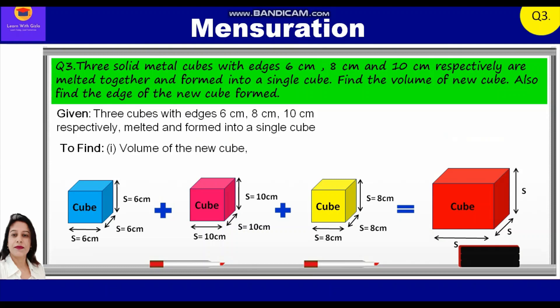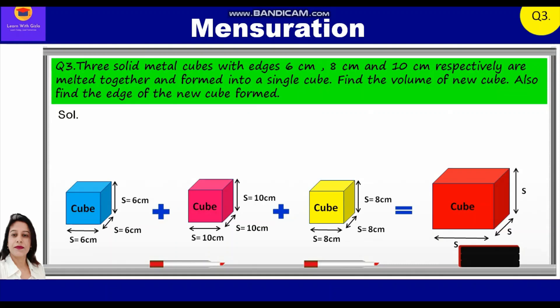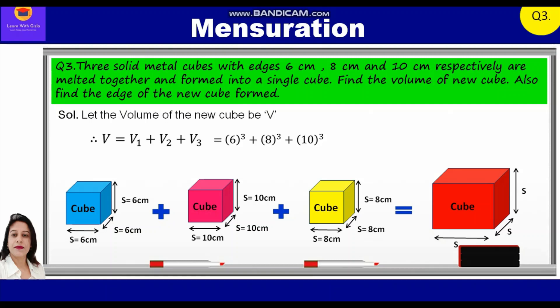Let the volume of the new cube be V. Therefore V is equal to V1 plus V2 plus V3, which is equal to 6 cube plus 8 cube plus 10 cube. Further, we can write 216 plus 512 plus 1000, which is equal to 1728 centimeter cube. So the total volume of the cube thus formed is 1728 centimeter cube.